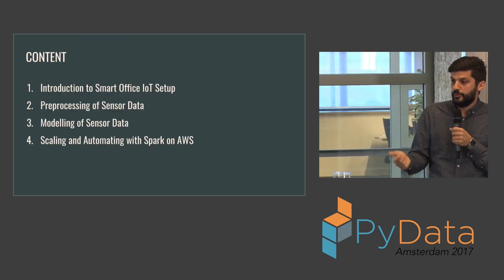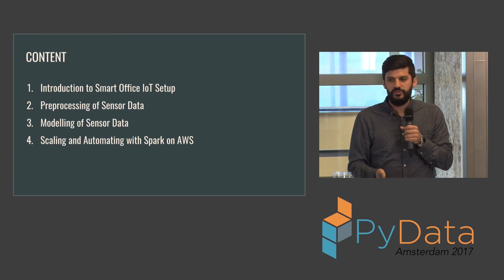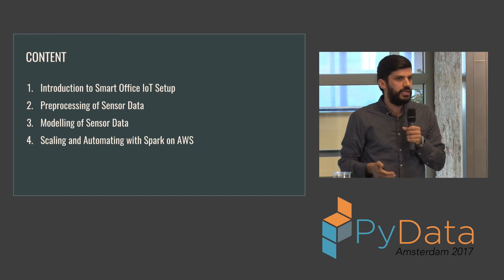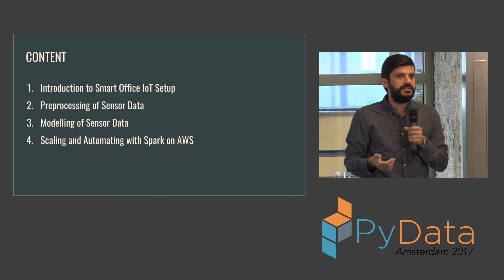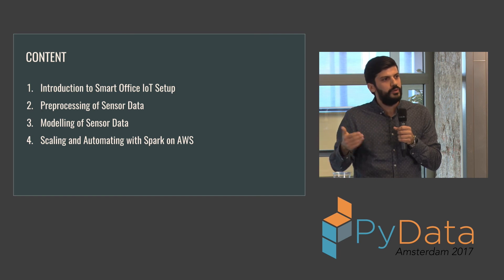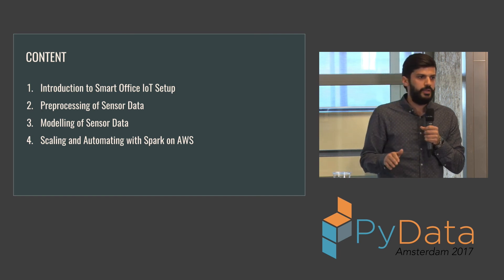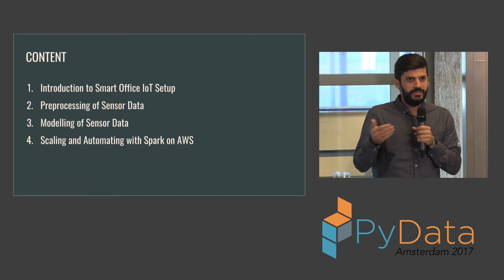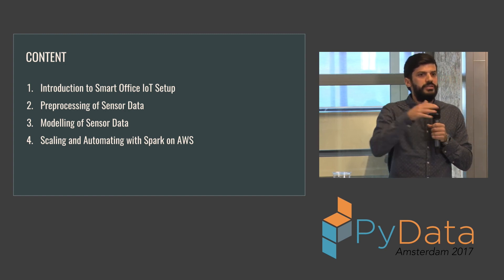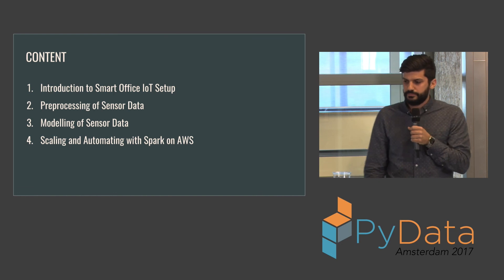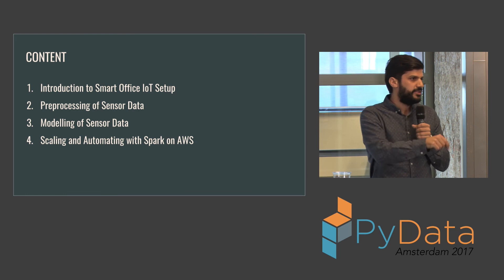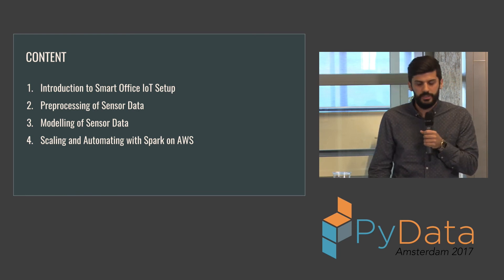These are the four points I want to go through: first, a short introduction into the smart office IoT setup and what kind of data we used and how we got it into the cloud; then some pre-processing — what we did to transform the data into a format we like to work with; then an example of how we modeled sensor data using a machine learning approach to do time series forecasting; and finally, scaling and automating things by adding Spark on top of our Python code and deploying everything on AWS.